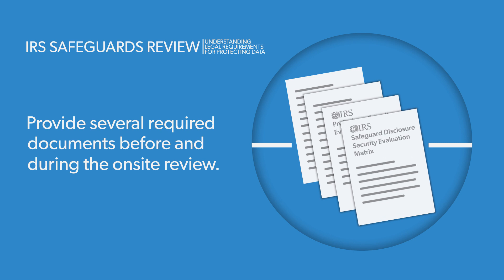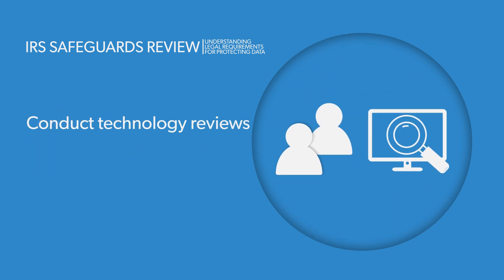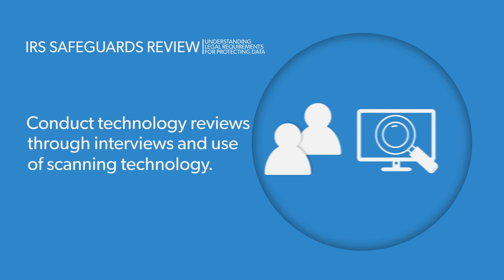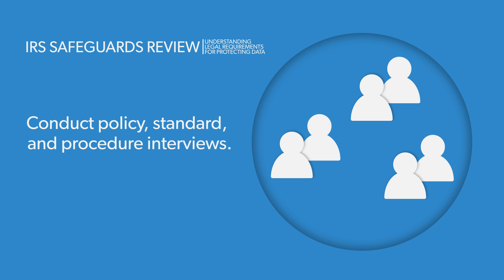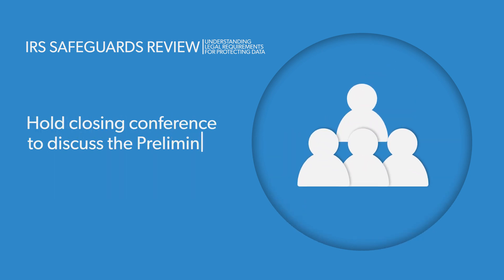The IRS will provide several required documents before and during the on-site review, including the preliminary security evaluation form and the safeguard disclosure security evaluation matrix. The IRS will also conduct technology reviews through subject matter expert interviews and use of scanning technology, conduct policy, standard, and procedure interviews, and hold a closing conference to discuss the preliminary findings report.